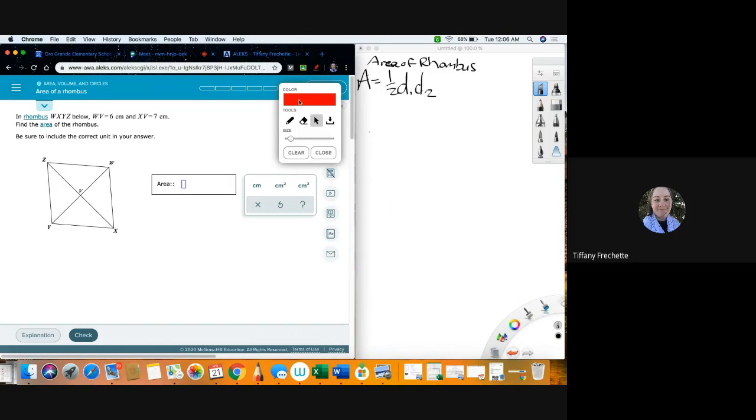So let's go ahead and look over here. So first I do actually want to turn the pen tool on really quick so I can mark these because it's a little easier to see them marked. So WV is six and XV is seven. And find the area of the rhombus. So remember, the diagonals of rhombus bisect each other. So this point cuts both diagonals in half. So if I know this half is six, if I keep going, this half is six.